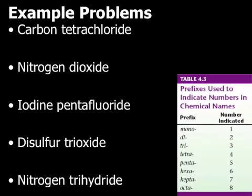So carbon tetrachloride means we have one carbon and tetra down here is four, and four chlorine. So CCl4.